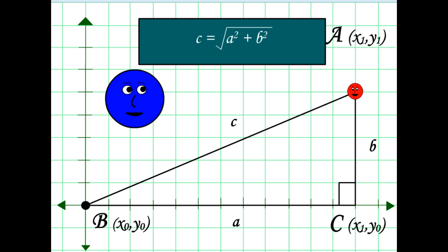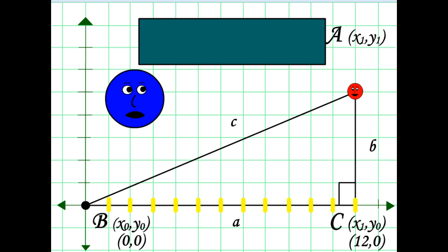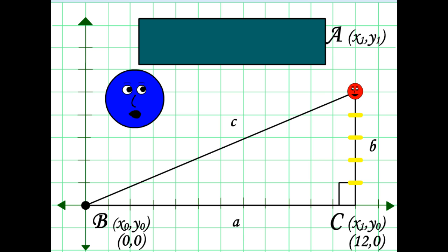Well, Dot, let's count. For side A, the distance from the origin is 12. Do you see that your y-coordinate is not changing? Yeah. So A equals x1 minus x0, or 12 minus 0, or 12. Similarly, for B, you are a distance of 5 up from the origin. Do you also see that your x-coordinate is not changing? Yeah. So B equals y1 minus y0, or 5 minus 0, or 5.